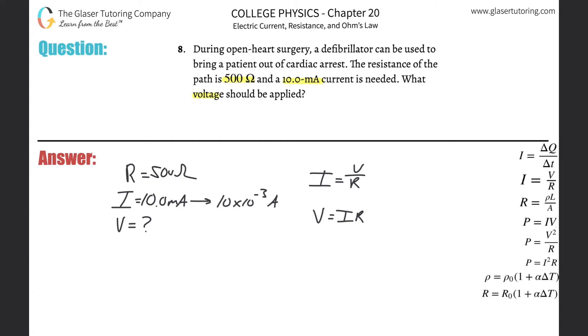So if I have to find voltage, I need to know the current passing through the wire and the resistance that the current is experiencing, and they gave that all to me. So this is basically 10 times 10 to the minus 3 multiplied by the resistance, which is 500. And we get 5, I guess 3 sig figs, so 5.00 volts.